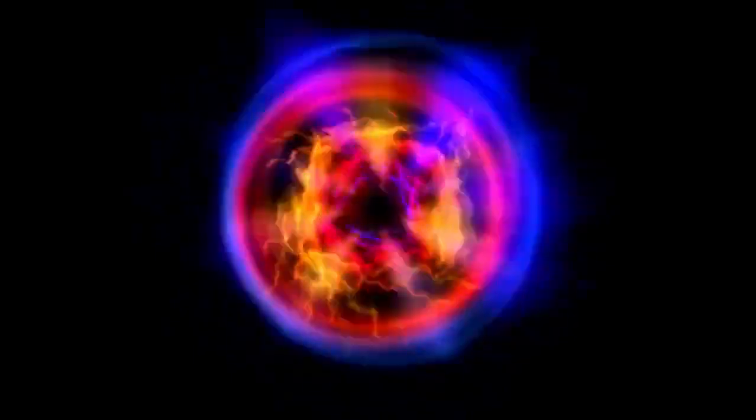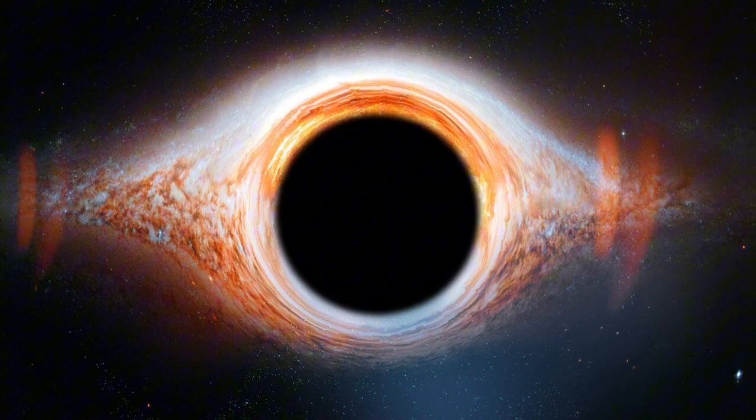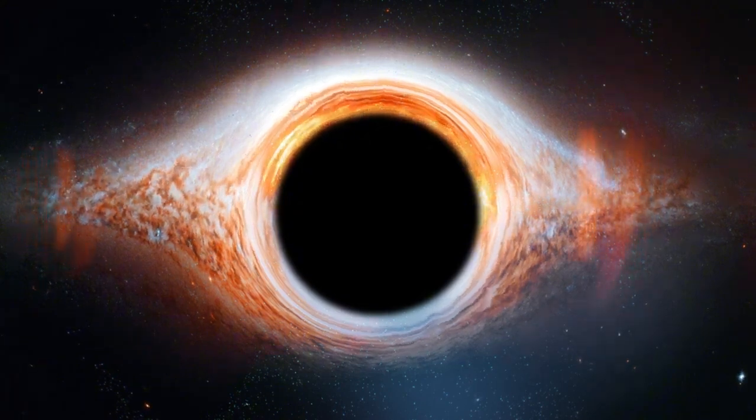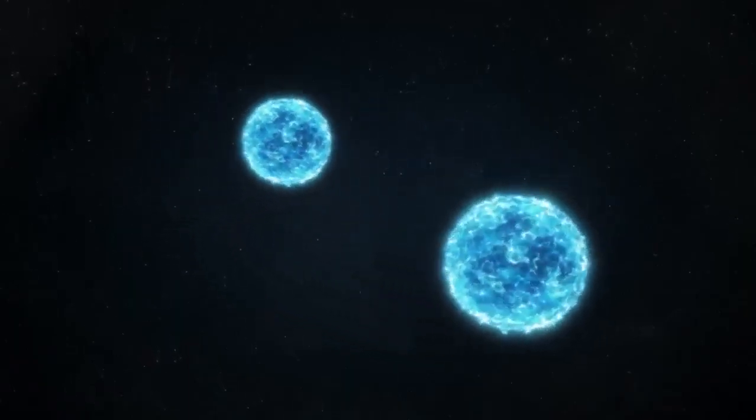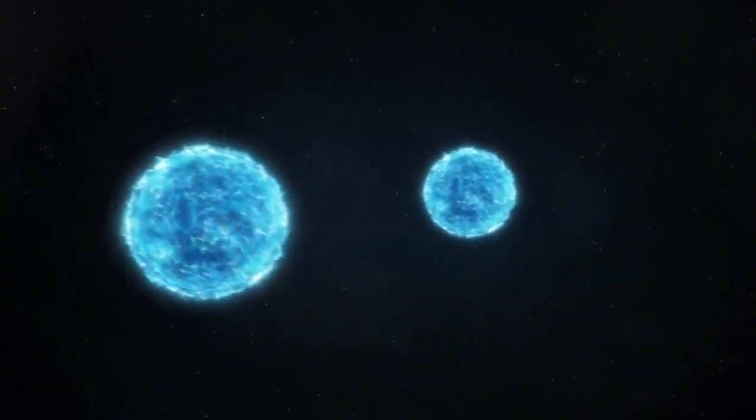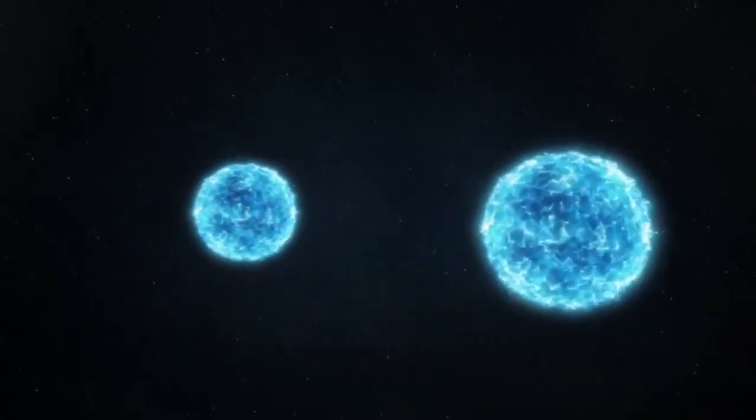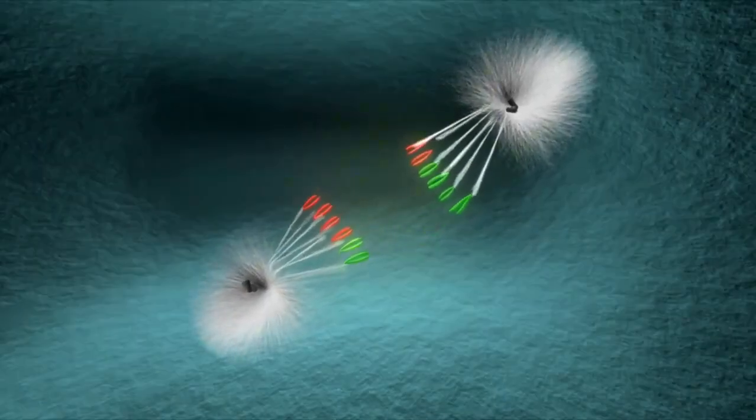But what happens after a star like Betelgeuse goes supernova? As we stand on the brink of the Betelgeuse supernova, it's like we're in a front row seat for cosmic history. But what's going to happen to this star? Well, there are a couple of possibilities. One scenario is that the core collapses, giving birth to a neutron star, a super dense and fascinating object. Another possibility is that Betelgeuse's core becomes so massive that it forms a black hole, a place where even light can't escape.